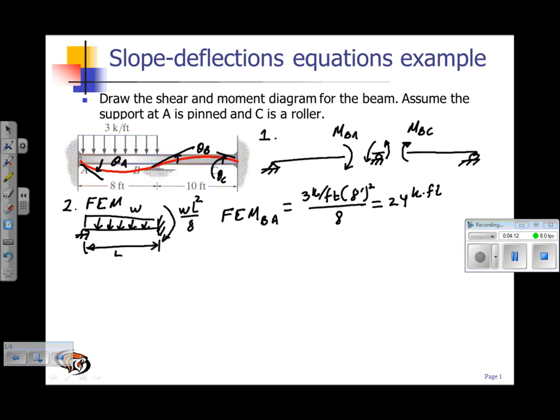Okay, so the fixed-end moment from B to C is equal to zero. Also, the reason the moment is positive is because the direction of the moment is clockwise.